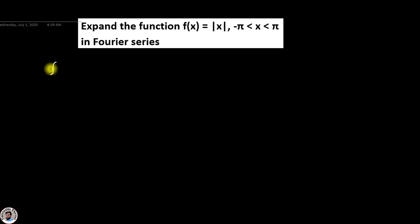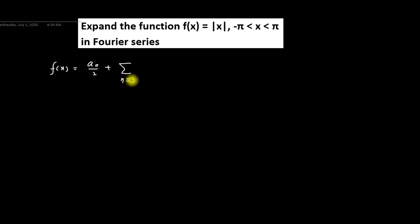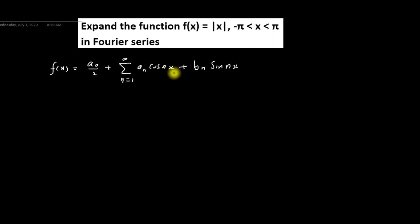We know that the equation of Fourier series is f(x) = a₀/2 + summation from n=1 to infinity of (aₙ cos(nx) + bₙ sin(nx)). This is the equation of Fourier series. In this equation we have to find Fourier coefficients a₀, aₙ, and bₙ.